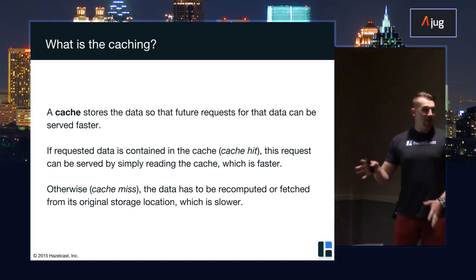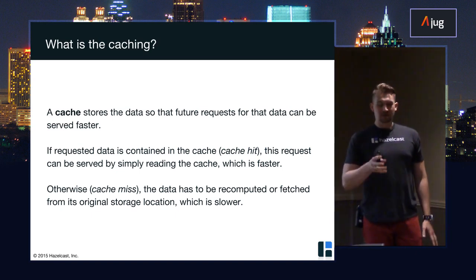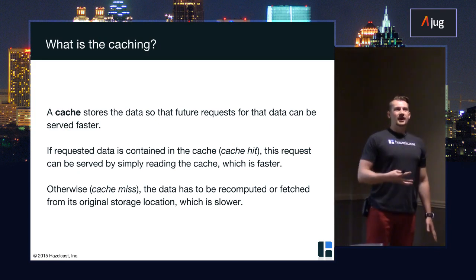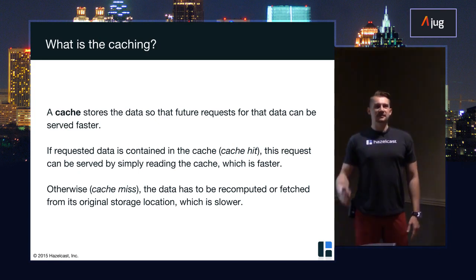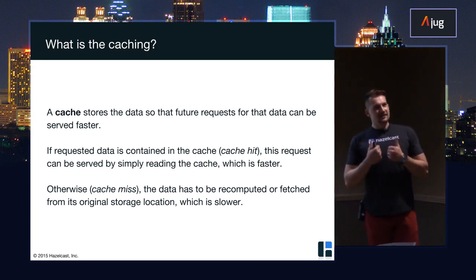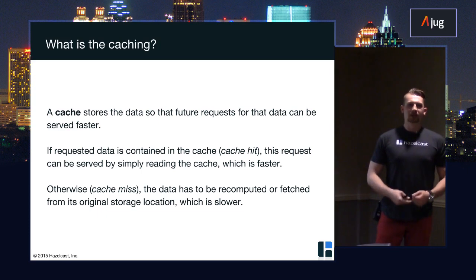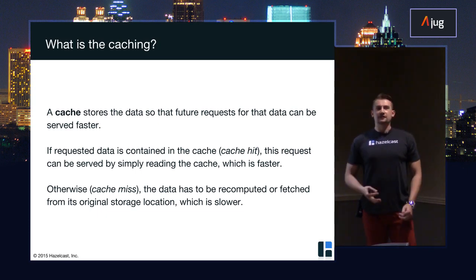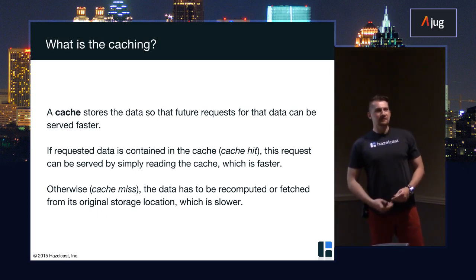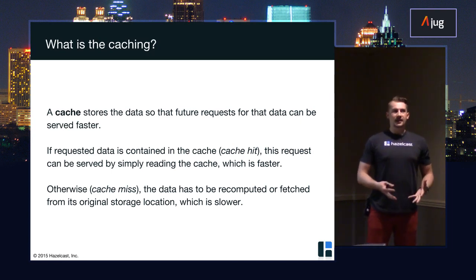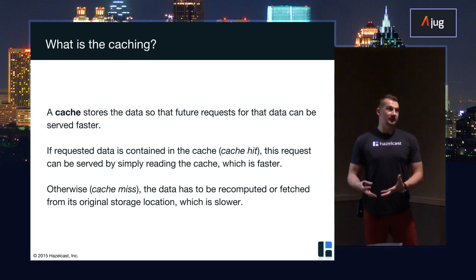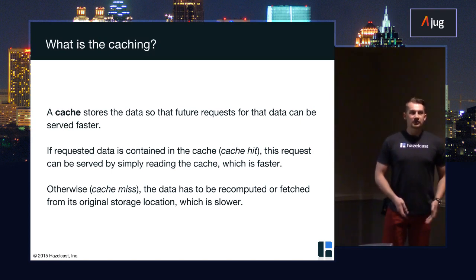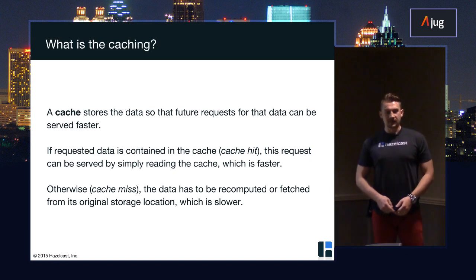So, cache is usually used to store the result of some very expensive task. It can be a database call, a very slow database call. It can be the result of some computation. And if the result is there in cache, we usually have a cache hit. If nothing is there, we usually have a cache miss.